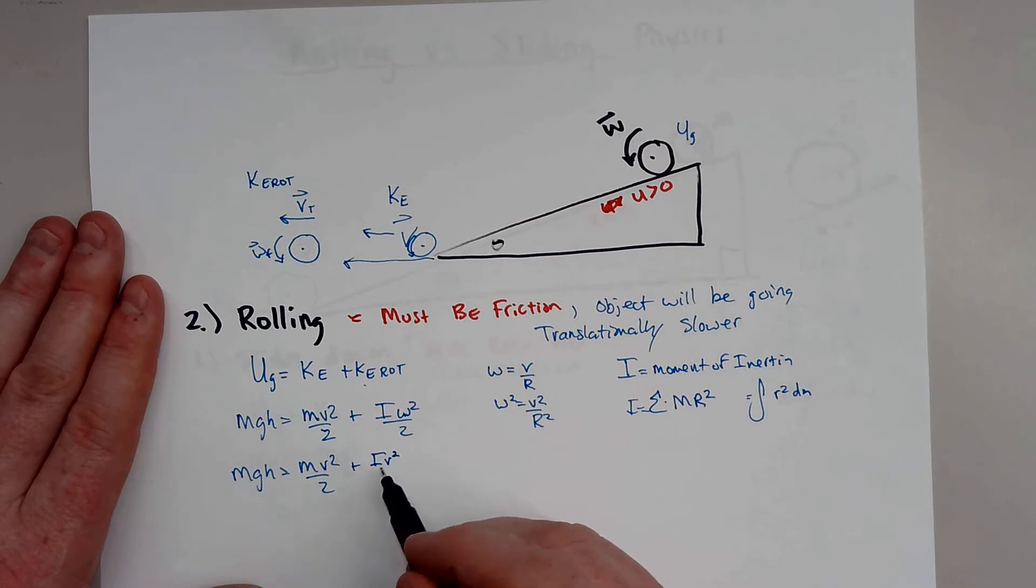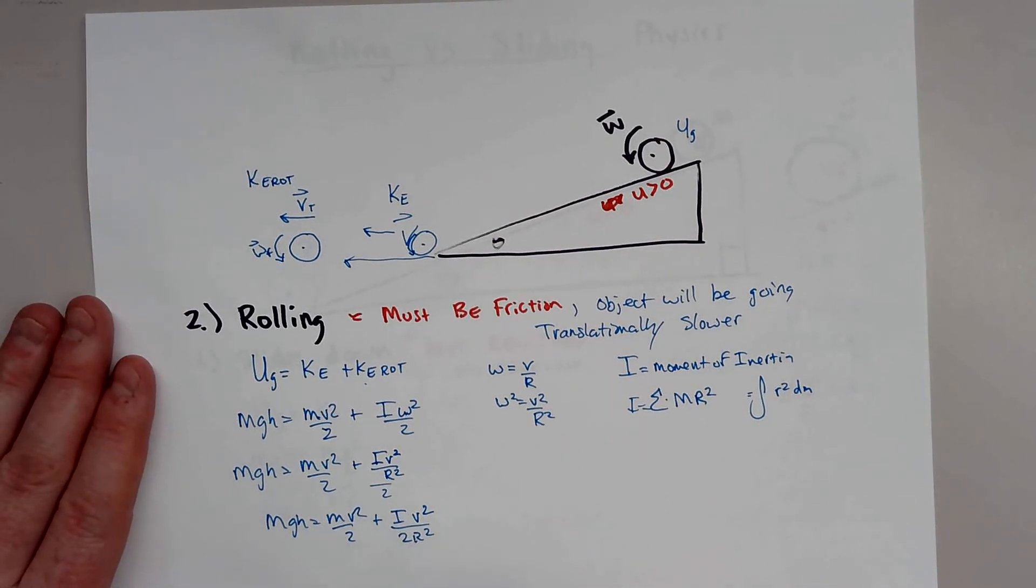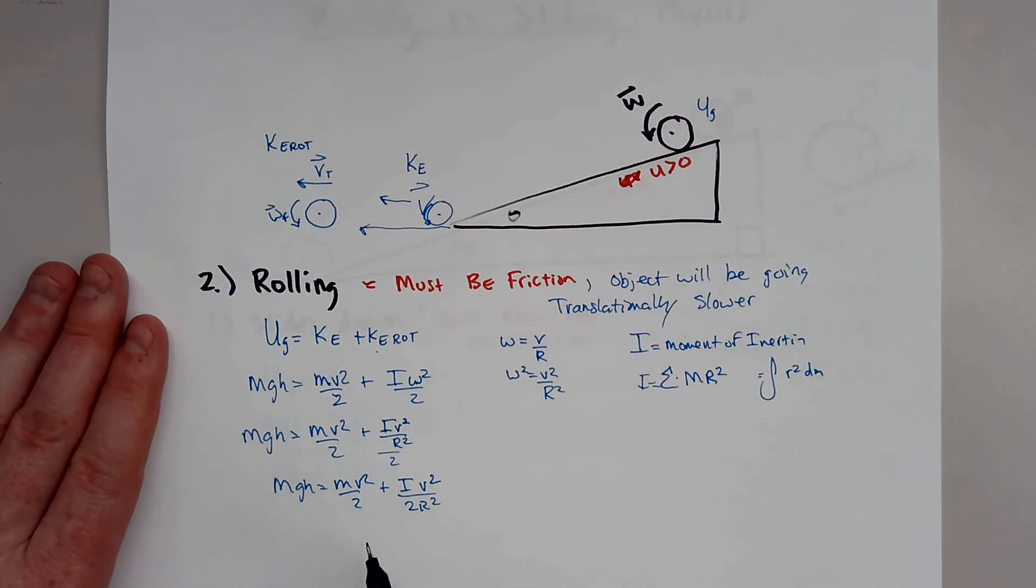And so this actually works out to this, i squared times v squared over r squared, divided by 2. So this actually works out to this, i v squared all over 2 r squared. So again, you'd plug this i in, and you'll see that some things cancel out. So that's actually how you'd have to do that. Just know the object will be going slower.